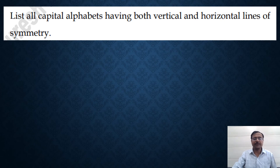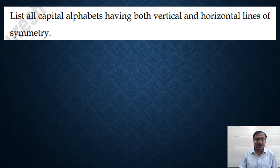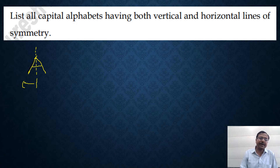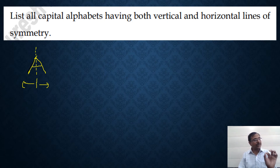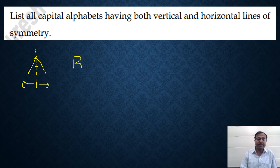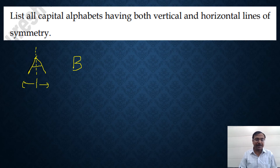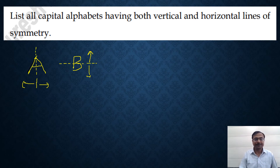Now let's look at capital alphabets and their lines of symmetry. For capital A, if you draw only a vertical line of symmetry, the figure is symmetrical on the left and right sides — so A has only the vertical line of symmetry. For alphabet B, the vertical line does not give symmetry since one side differs from the other. But if you draw a horizontal line, the figure is symmetrical on the top and bottom portions — therefore alphabet B has a horizontal line of symmetry.